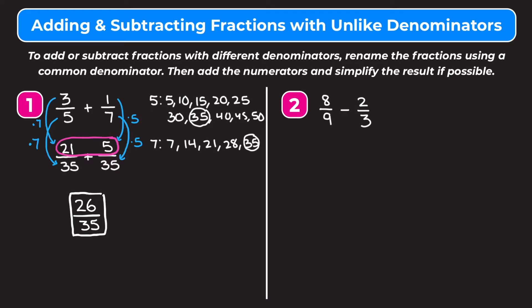Let's move on to example 2, which is subtraction. Luckily the rules for subtraction are pretty much the same as the rules for addition. First we need a common denominator, so we have to find the least common multiple of 9 and 3. Starting with multiples of 3: 3, 6, 9, 12, 15, 18. The first multiple of 9 is itself, which we realize is also in the 3 list. So 9 is the least common multiple of 3 and 9.